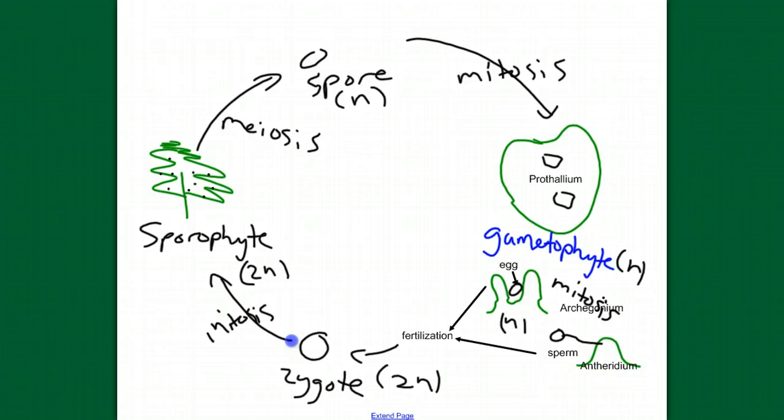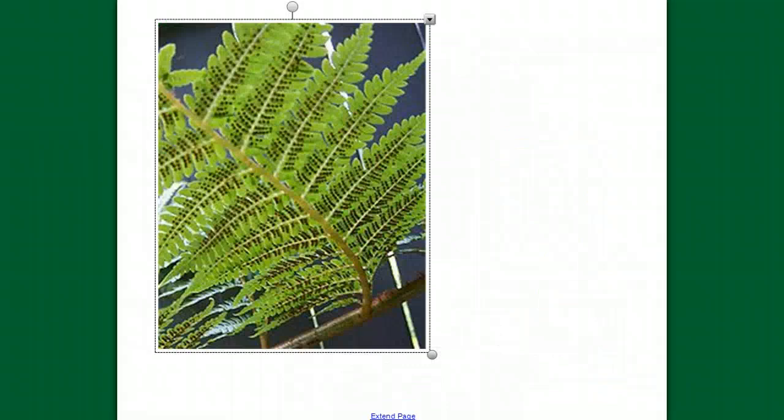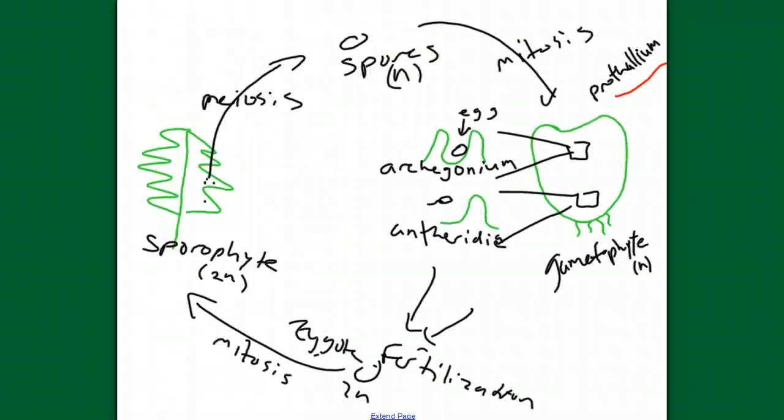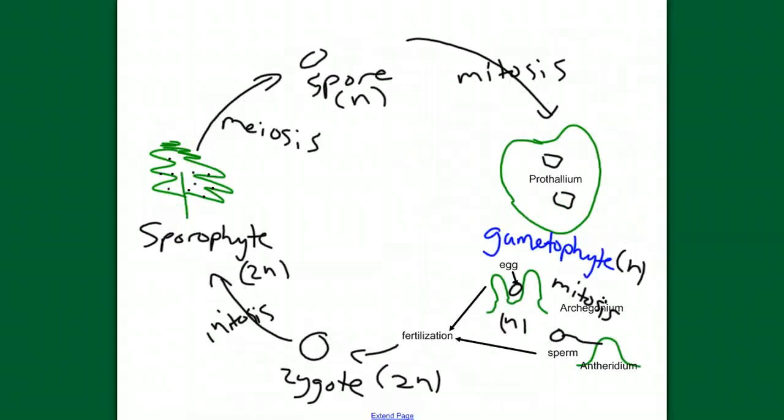We have a dominant sporophyte. Meaning, when we look at a fern, when we see this, we're seeing the diploid generation, the sporophyte generation. And the gametophyte generation, or the prothallium, is much smaller. It doesn't last as long. It's small, but it is independent. It lives separate from the sporophyte.